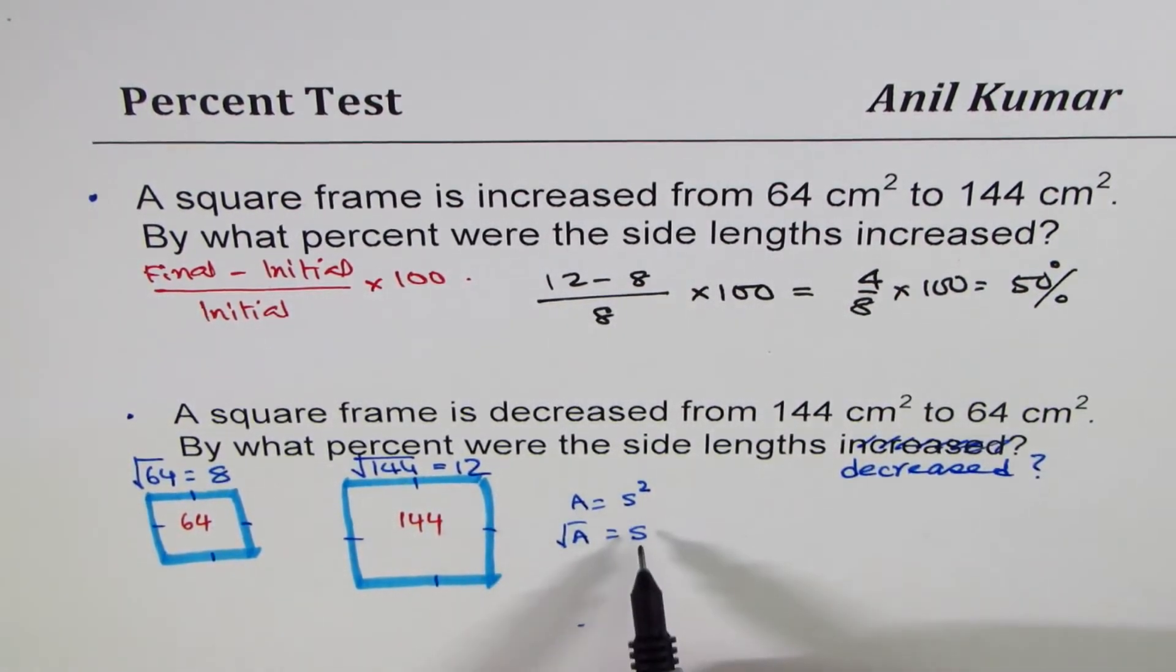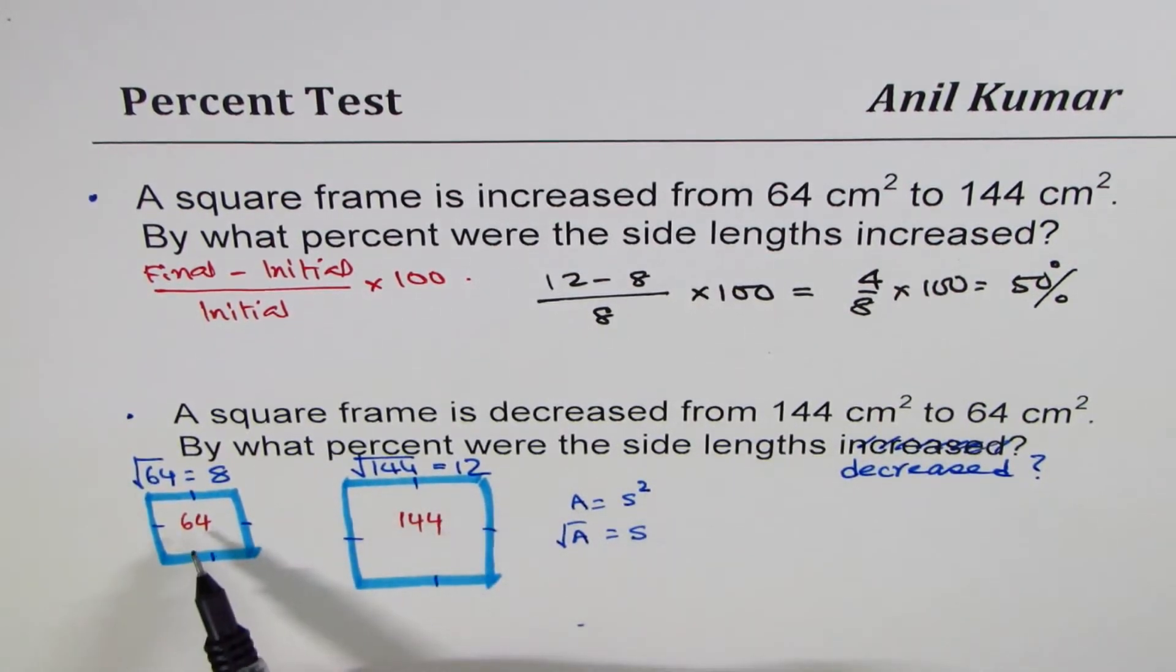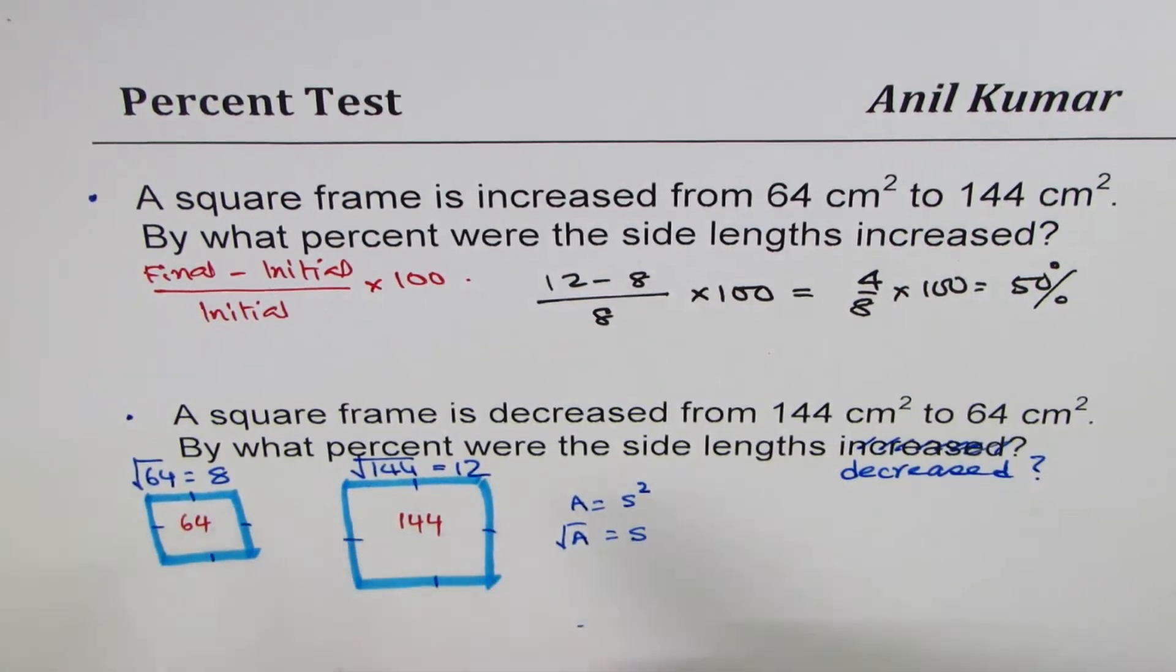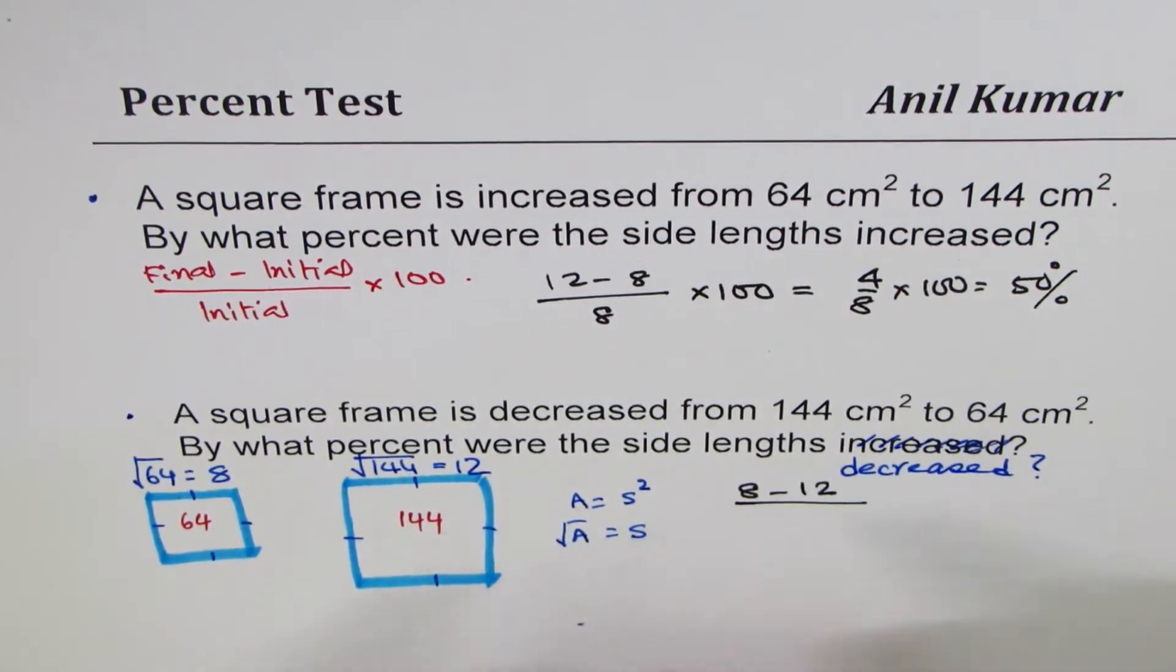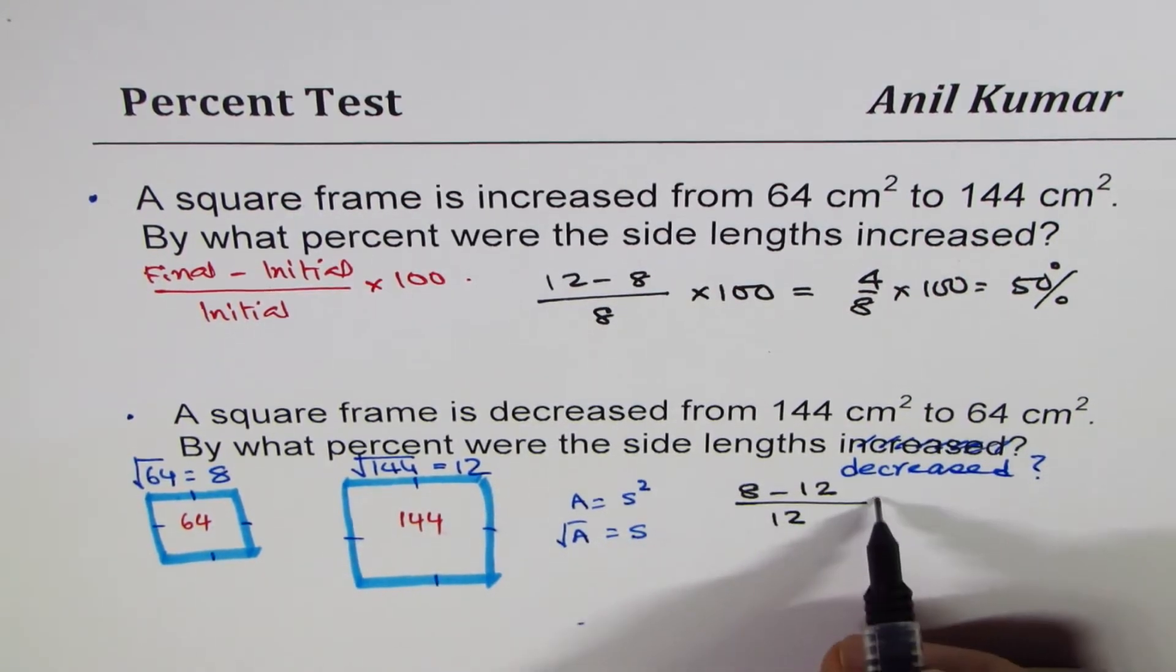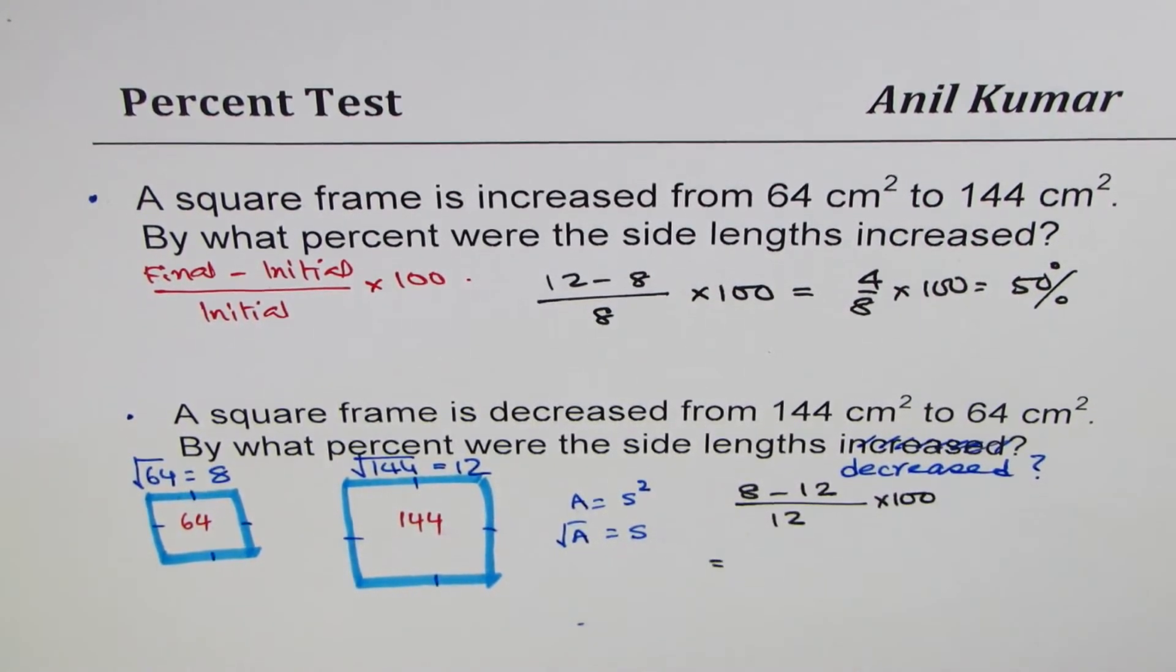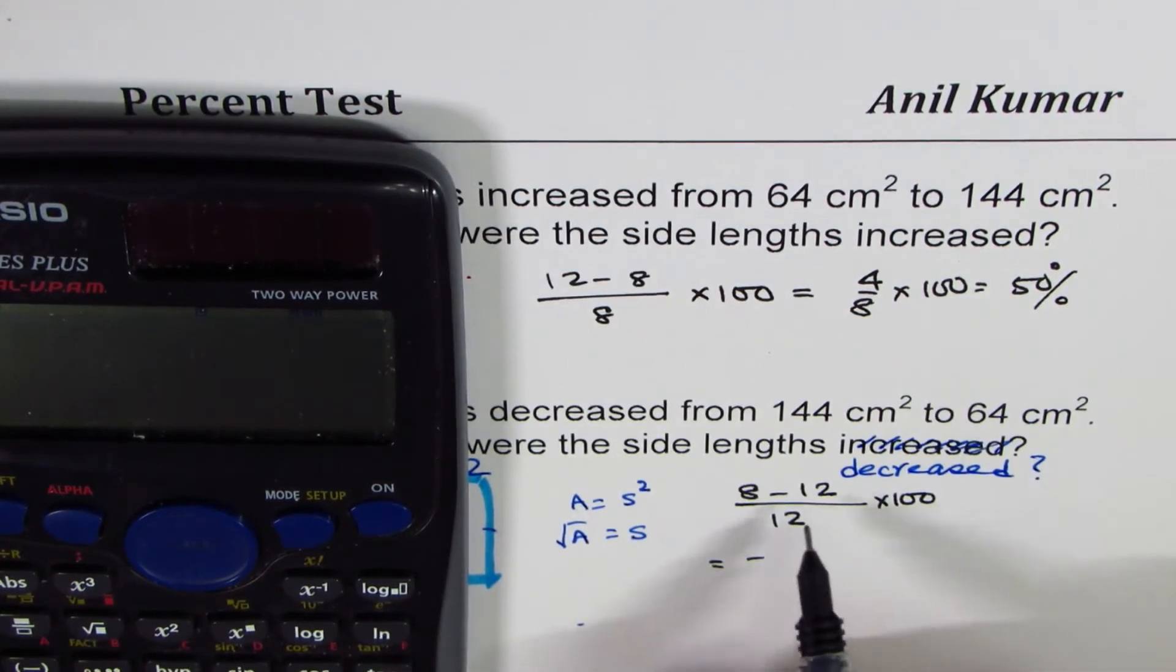In the second case, however, the square frame is decreased from 144 to 64, right? So the situation has reversed. Finally it's 64 - do you understand? Finally 64. That is a decrease, right? So it is 8 minus 12 divided by initial - started with 12, do you see that part - times 100. And that makes a huge difference. So let's use the calculator.